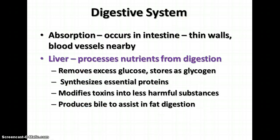Absorption occurs in the intestine, where the inner walls are thin and blood vessels are close by. The liver is also involved with the digestive system. It processes nutrients from digestion, removing excess glucose and storing it as glycogen, synthesizing essential proteins needed by various organ systems, modifying toxins into less harmful substances, and producing bile, which assists in fat digestion. Bile helps emulsify fat into smaller particles so enzymes can act on them more effectively.